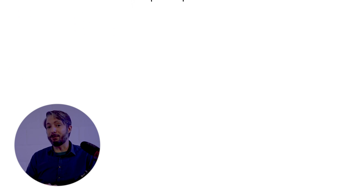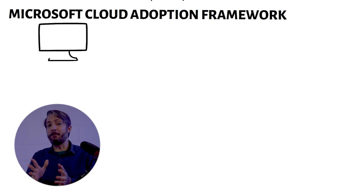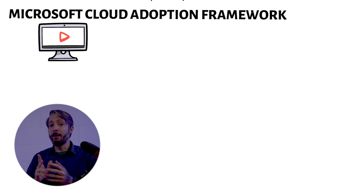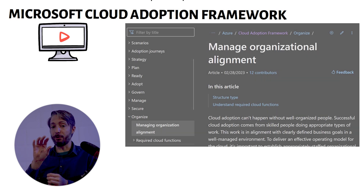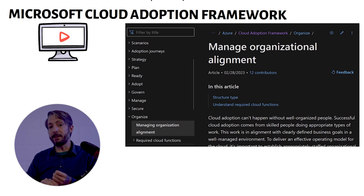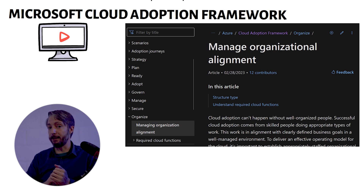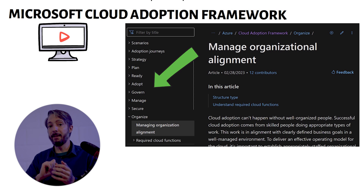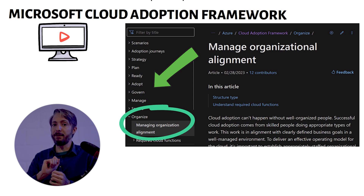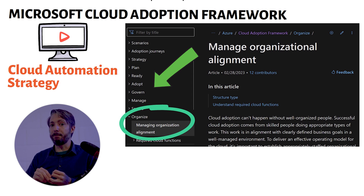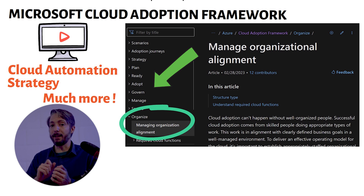Let's have a look at where this fits in the Microsoft Cloud Adoption Framework, the CEAF. The CEAF is a collection of documentation, implementation guidelines, and best practices to adopt the public cloud Azure. It has several pillars which can be thought of as different phases in the public cloud adoption journey. The CCOE by Microsoft is part of the Organize pillar of the CEAF, which also covers cloud automation, strategy, and other topics dealing with managing organizational alignment for the cloud adoption journey.